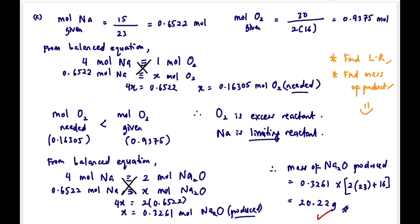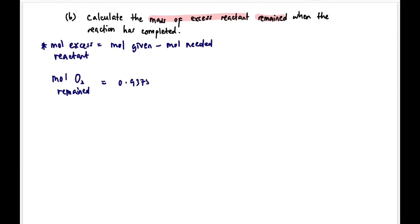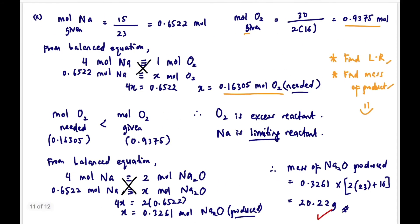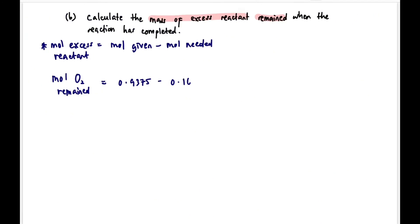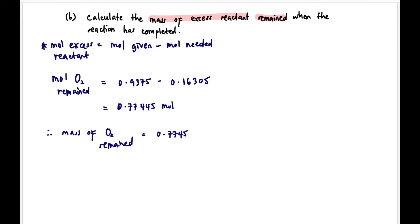Mole O₂ remain = mole given − mole needed = 0.9375 − 0.16305 = 0.77445 mol. If you didn't calculate mole needed in part a, you must do that step first using the balanced equation method. In this case we already have it, so mole O₂ remain = 0.77445 mol.